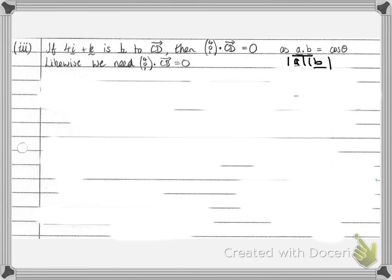Now we need to show that 4i plus k is perpendicular to CD and to CB. So what we can do is take the vector 4i plus k and write that in column vector form. So that's 4i, there were no j's, and 1k. And if we do the dot product of that dotted with CD or with CB, we should get zero. This is because we know that the dot product, a dot b, divided by the lengths of the vectors a and b, is equal to cos theta, where theta is the angle between the two vectors. We want the angle to be 90 degrees. And cos of 90 degrees is zero.